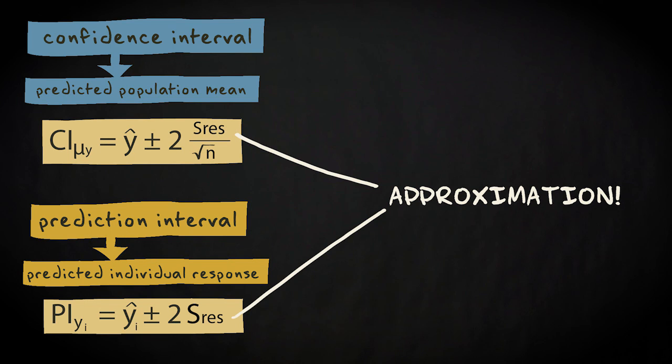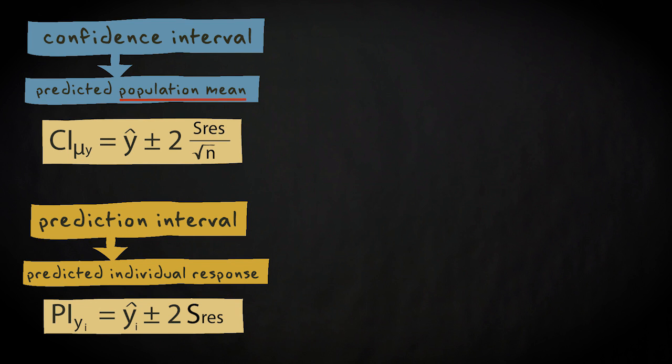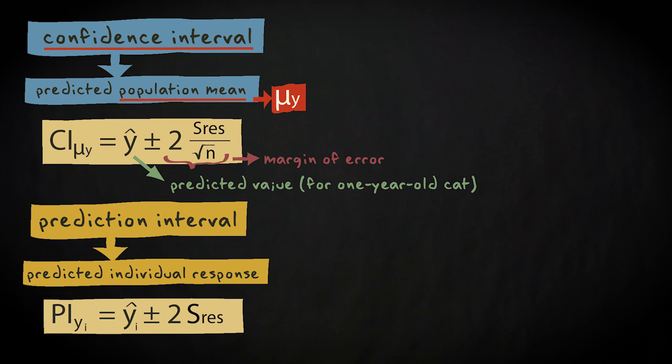First we'll look at the interval for predictions of the mean response in the population for a particular predictor value. We refer to this as the confidence interval for a predicted population mean. The approximation of the formula is the predicted value obtained from our sample for a one year old cat plus and minus the margin of error.